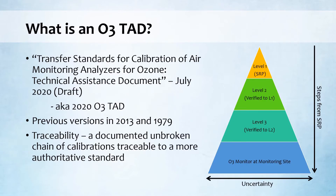What is an Ozone TAD? The full name is Transfer Standards for Calibration of Air Monitoring Analyzers for Ozone Technical Assistance Document. The current draft version came out in July of 2020, and EPA solicited comments and feedback up until May of 2021. This 2020 version will replace the previous 2013 version, which replaced a 1979 version. The 2020 Ozone TAD and its predecessors describe the process of ozone traceability, defined as a documented, unbroken chain of calibrations traceable to a more authoritative standard. The Level 1 Standard Reference Photometer is your highest authority, and that authority is passed from standard to standard until you get to the instrument that actually measures ambient ozone data at the monitoring site.